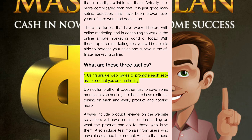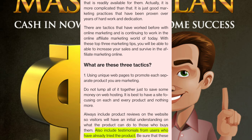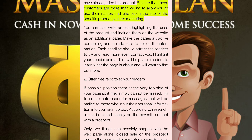Tactic one: use unique web pages to promote each separate product you are marketing. Do not lump all of it together just to save money on web hosting. It is best to have a site focusing on each product. Always include product reviews on the website so visitors have an initial understanding of what the product can do. Include testimonials from users who have already tried the product. You can also write articles highlighting the uses of the product. Make the pages attractive, compelling, and include calls to action. Each headline should attract readers to try and read more — even contact you. Highlight your special points so readers learn what the page is about.